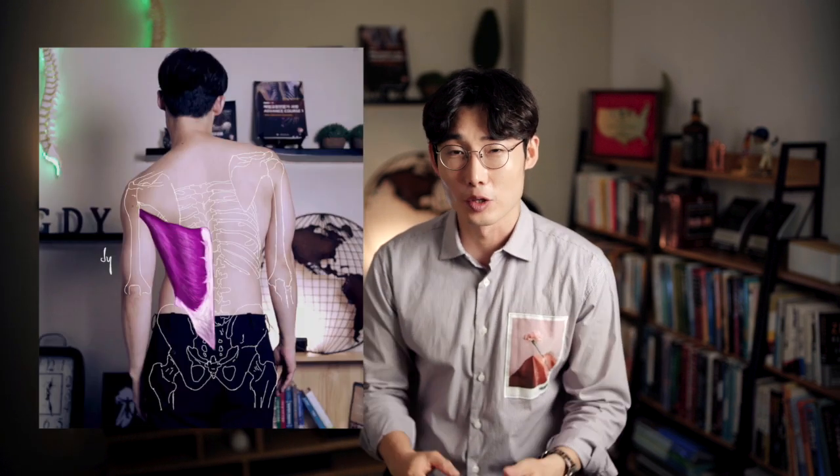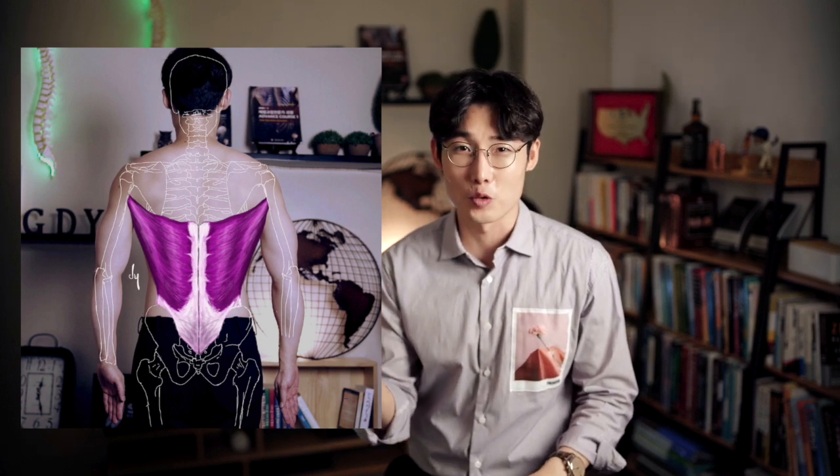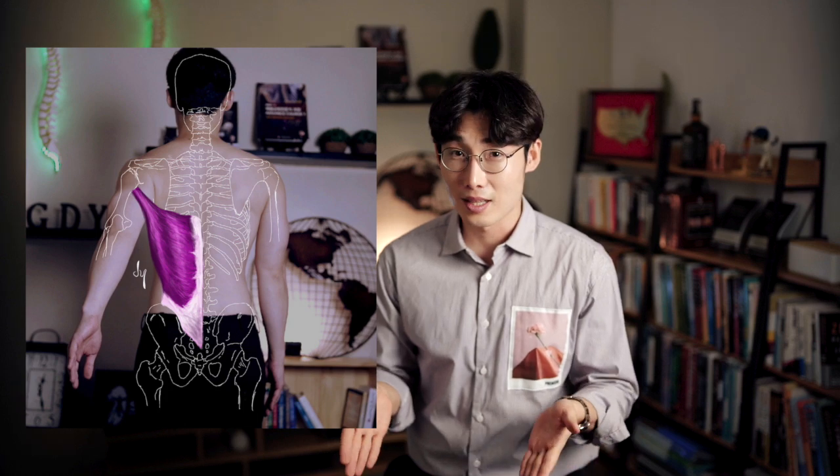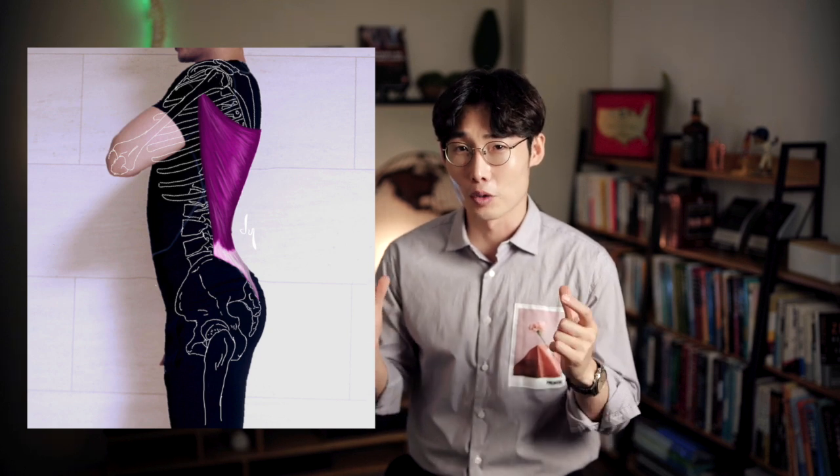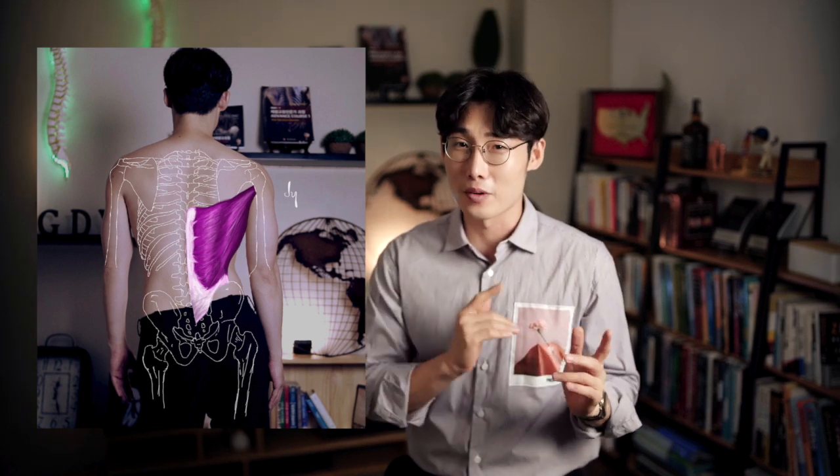Let's summarize body types when the latissimus dorsi muscle is shorter than normal length. First, the shoulder height is lower rather than neutral. Second, the shoulder joint is internally rotated rather than neutral. Third, the shoulder joint is extended backwards rather than neutral. Fourth, the pelvis bone is anteriorly tilted rather than neutral. Fifth, one side of the pelvic bone is higher rather than the other side.